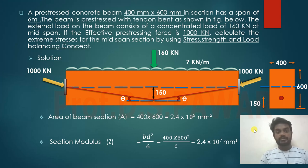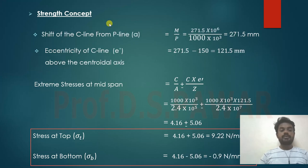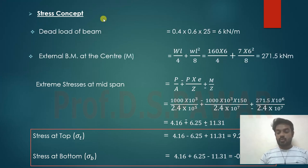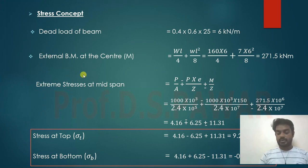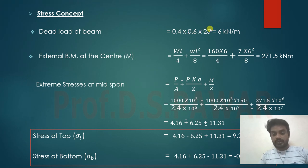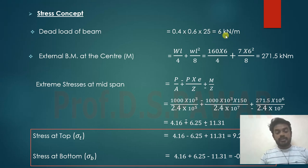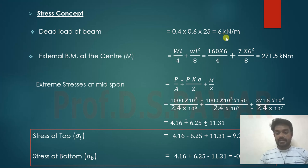First, we calculate the stresses using the stress concept. The dead load, which is the self-weight of the beam, is 0.4 × 0.6 × 25 = 6 kN/m as a UDL. We then calculate the external bending moment at the center.